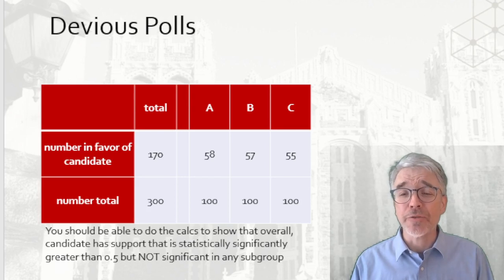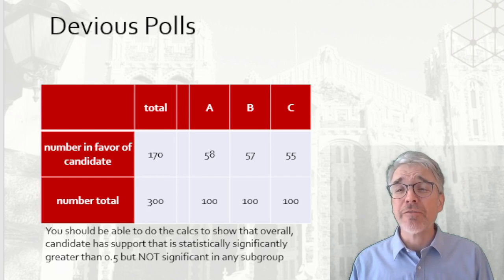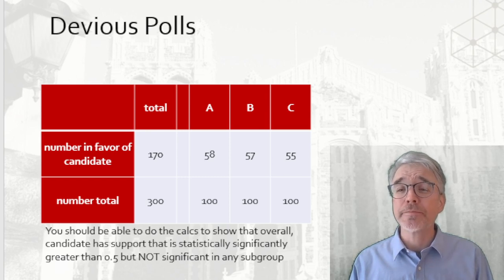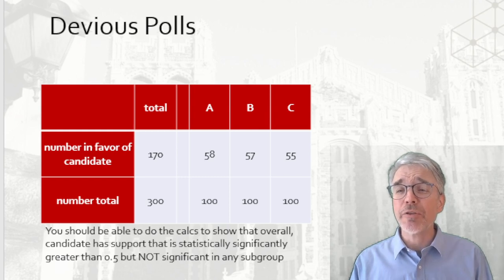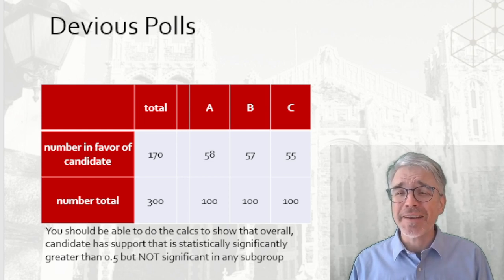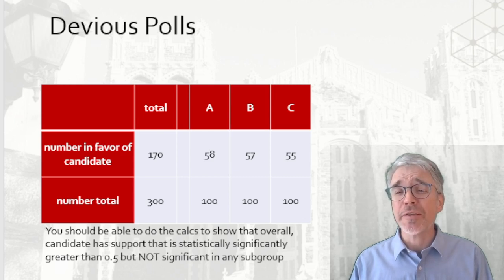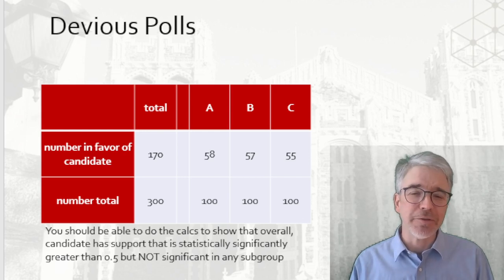Now you should be able to work out this apparent puzzle I've called the devious poll. Overall, if I look at just the total sample, I can see support in favor of some candidate of 170 people out of 300, and that's statistically different from zero at the 5% level. But if I have three subgroups — maybe neighborhoods A, B, and C — none of the individual subsamples are statistically significant. This is a reminder that statistical significance is not linear. A p-value of 4.9% is called significant; a p-value of 5.01% is called not significant. That can produce weird, non-intuitive effects, and part of your stats education is developing better intuition for how some people might try to play you with that.